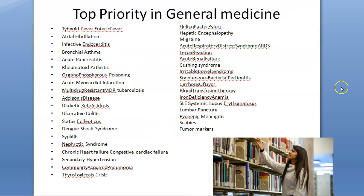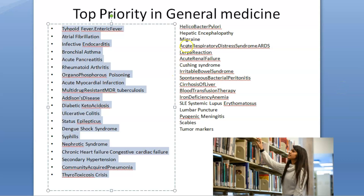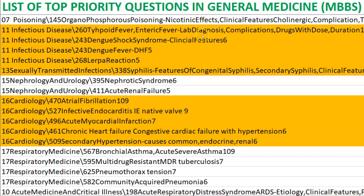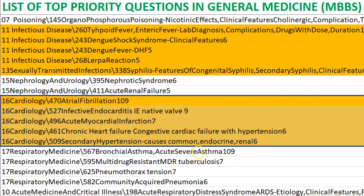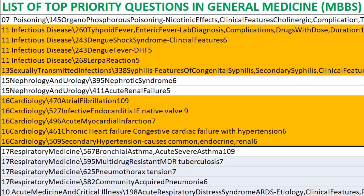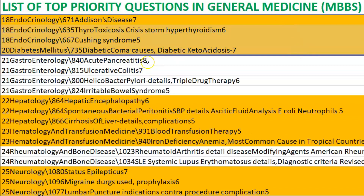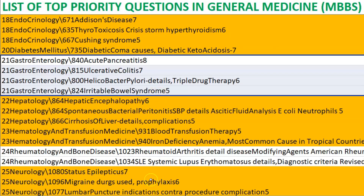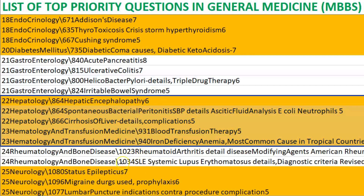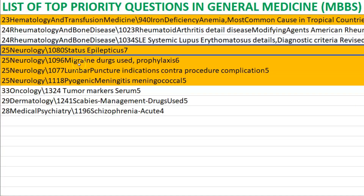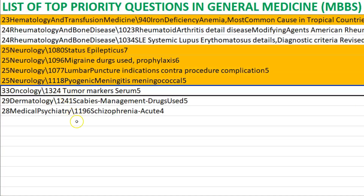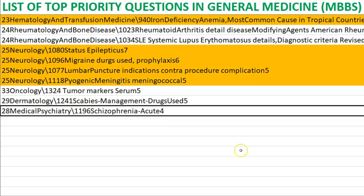Here are the top priority questions in General Medicine that you must read. The list covers: Poisoning, Infectious Diseases, Nephrology, Cardiology, Respiratory Medicine, Endocrinology, Gastroenterology, Hepatology, Rheumatology, Neurology, Oncology, Dermatology, and Psychiatry. Please go through this complete list carefully.